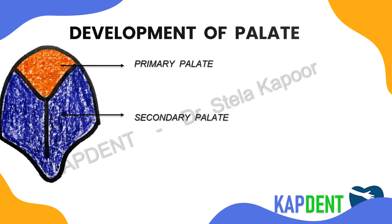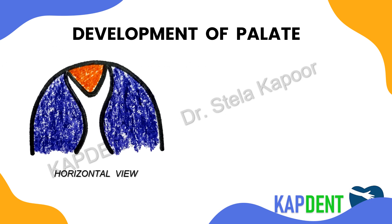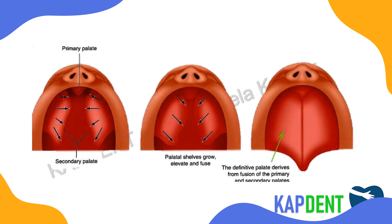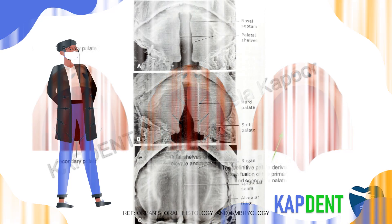In horizontal view, we can see the primary and secondary palate approximating each other. In the vertical view, we can see the nasal septum approaching the two palatine processes. The portion that ossifies is called the hard palate, while the non-ossified portion is called the soft palate.